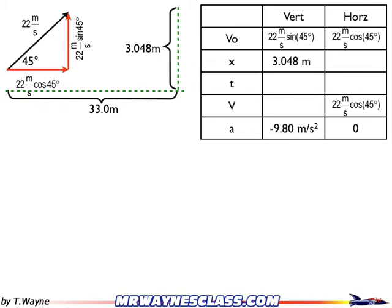I also know the height of the goal post, 3.048 meters, and I know horizontally it's 33 meters away. So now how am I going to solve this? Well, time is going to be the key to solving this.